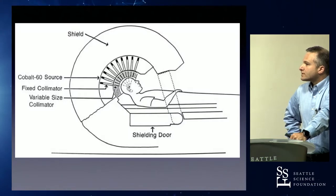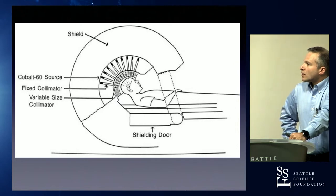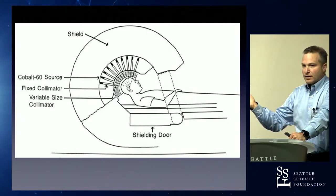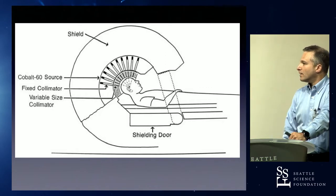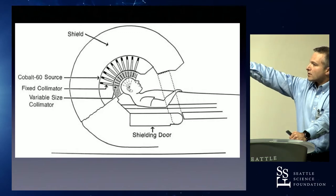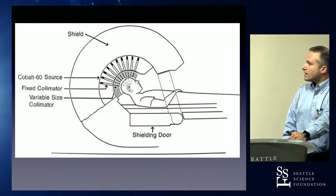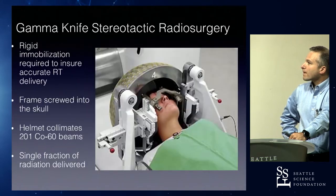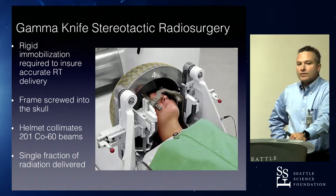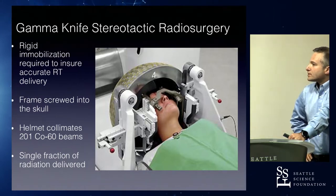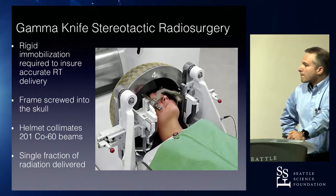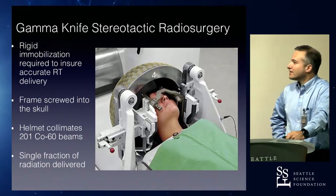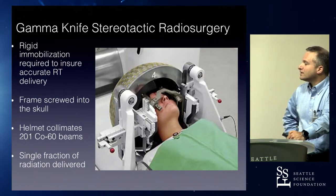The Gamma Knife, which we have downstairs — there are two in the city, one here and one at Harborview — essentially has 192 cobalt sources behind a metal collimator. The cobalt is always decaying, giving off gamma rays at about 1.25 MeV that travel down a tube. There's a variable collimator where you can choose the orifice size, and beams converge to a point. It requires rigid immobilization with a frame screwed into the skull, and is given in a single fraction — because no one would want to come back a second day and have the frame put on again.